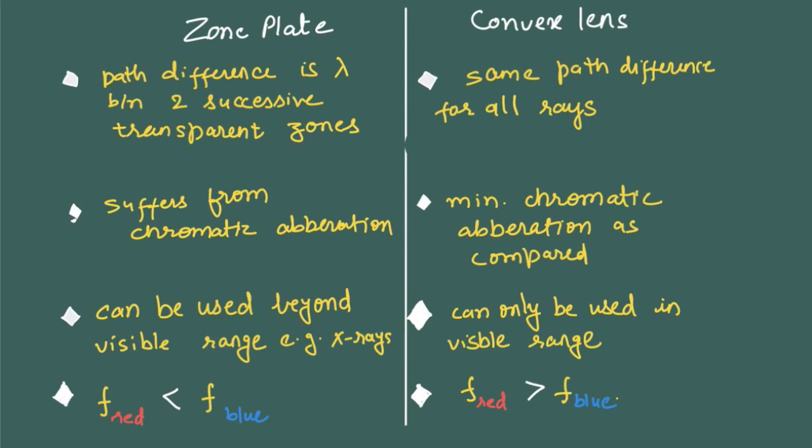And the last one would be the comparison between focal length for different wavelengths. In case of zone plate, focal length is inversely proportional to wavelength. Whereas, in case of convex lens, longer the wavelength, greater is the focal length. So red will be having longer focal length as compared to blue color. That's it about comparison between zone plate and convex lens. If you feel we have missed something, write in the comment box. Thank you.